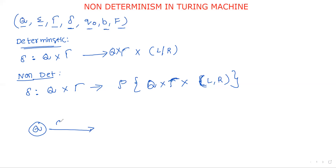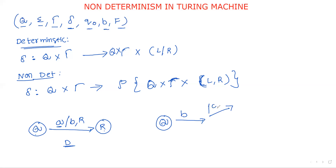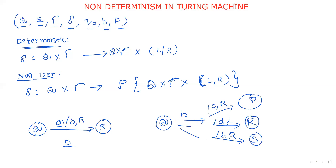For example, in a deterministic case: on state q with input symbol a, a is replaced with b and then move to right direction — so q goes to state r. That is a single outcome. In non-deterministic, on state q with input b, we have different cases: b is replaced with c and move right, or b is replaced with d and move left, or b is replaced with b again and move right. So from a single tape symbol we have many possible cases. This is the main difference between deterministic and non-deterministic Turing machines.